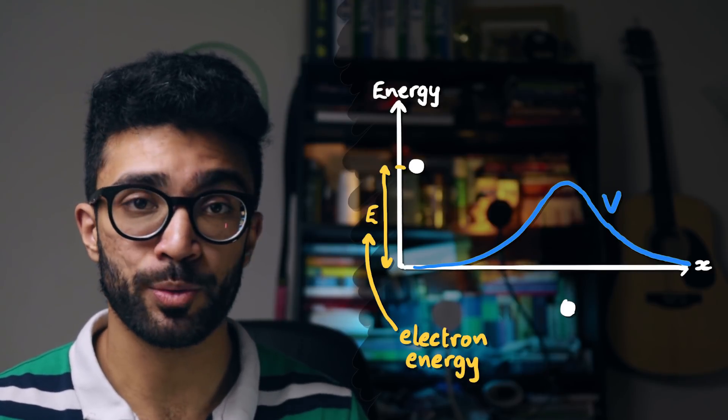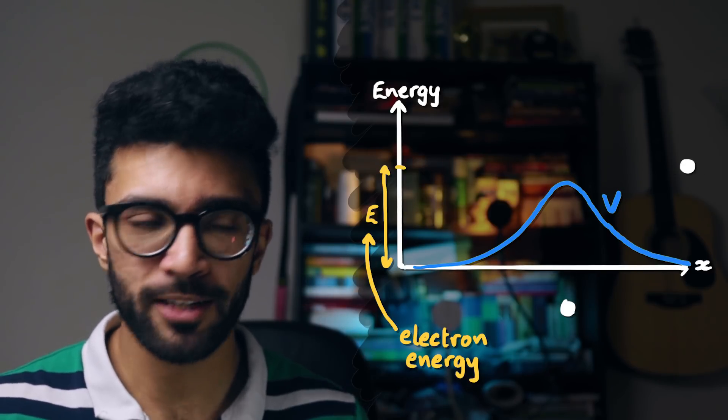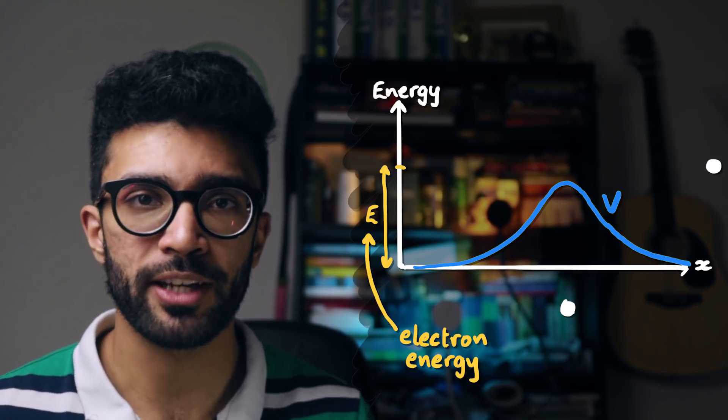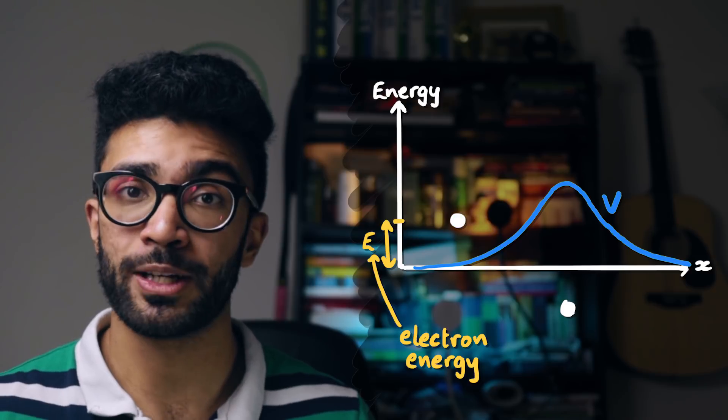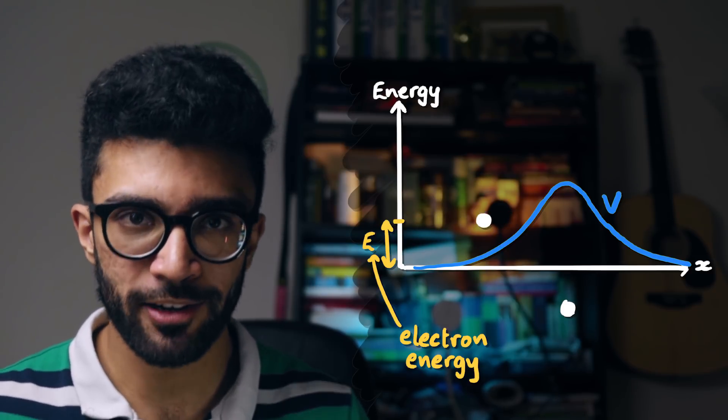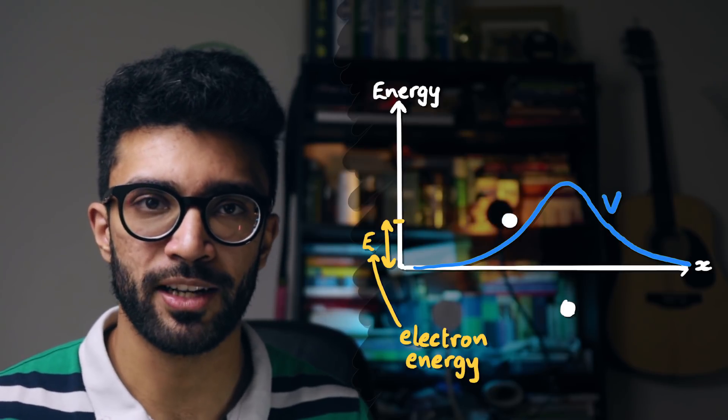If we provide the first electron with enough energy, then it can get over the potential barrier — it can make it to the other side of the electron. But if we don't give it enough energy, if the energy we provide to the first electron is less than the peak energy of the potential barrier, then the electron cannot get to the other side of the potential barrier. What I want you to take away from this is an understanding, a visualization of how an electron would behave if it were restricted to move along a straight line with a second electron creating a potential barrier, and we need to provide the first electron with enough of a kick to get over this potential barrier.